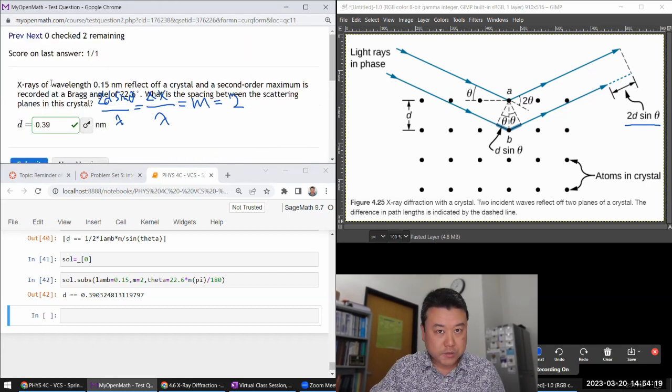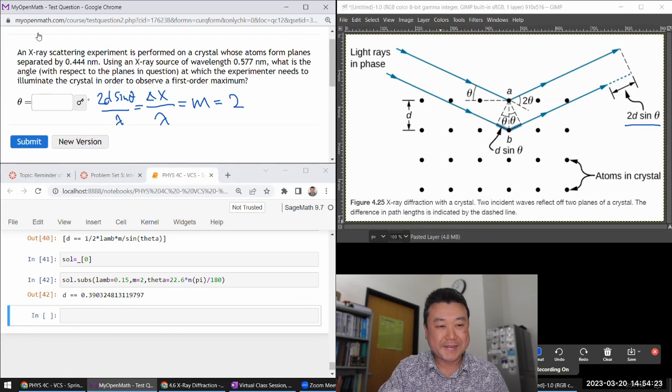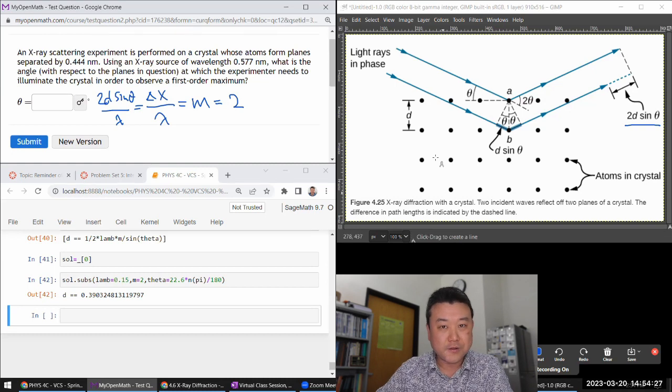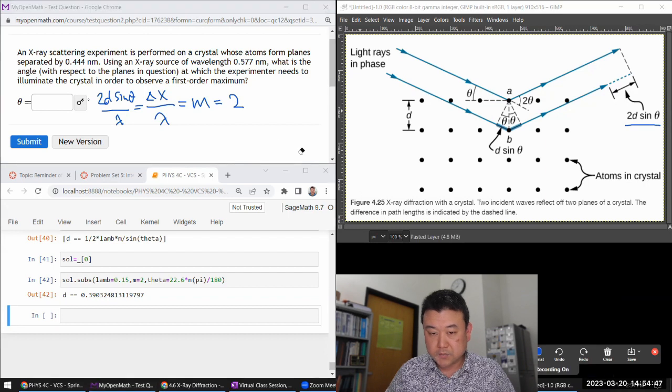All right. I think we got two more questions of this type. So let's just complete them all. It says, x-ray scattering experiment is performed on a crystal whose atoms form planes separated by—here they are giving us the separation distance d. It says, using an x-ray source of this wavelength, what is the angle with respect to planes in question at which the experiment needs to illuminate the crystal in order to observe the first order maximum.